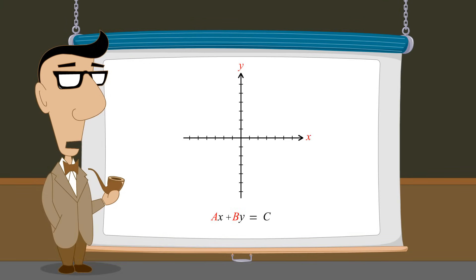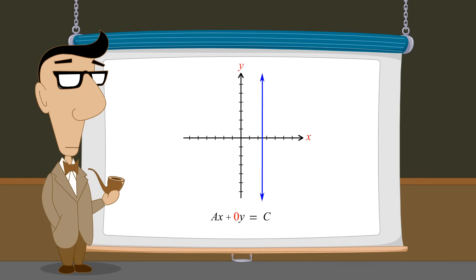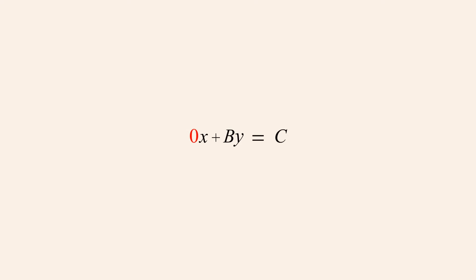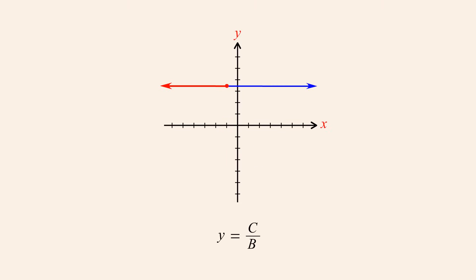By setting either a or b to zero, linear equations written in standard form can represent horizontal or vertical lines. When a is zero, the x-term vanishes and we have an equation with a single variable, y. If we divide both sides by b, we can see that y is equal to the constant expression c over b. Since x can have any value while y always has the constant value c over b, this equation describes a horizontal line whose y-intercept is the point zero, c over b.